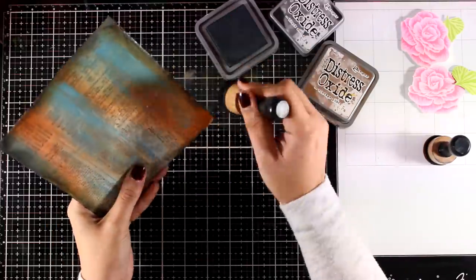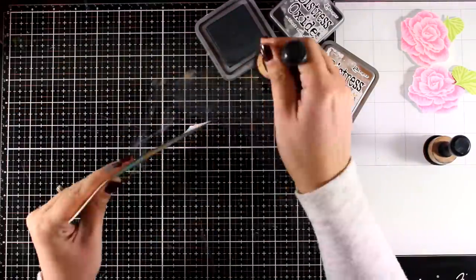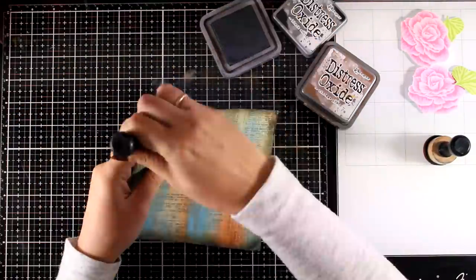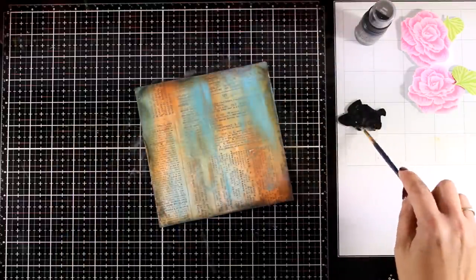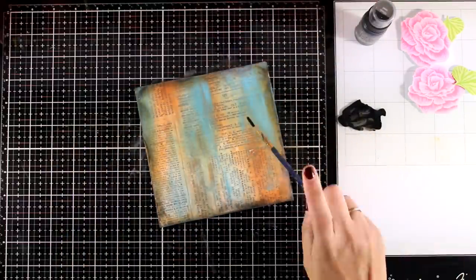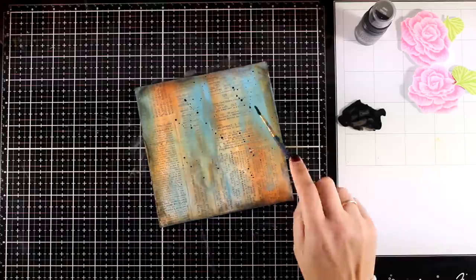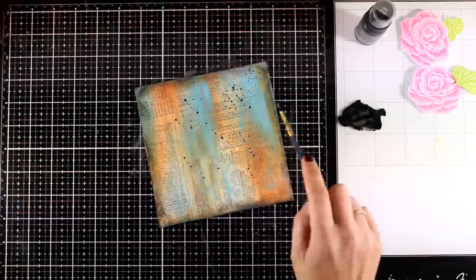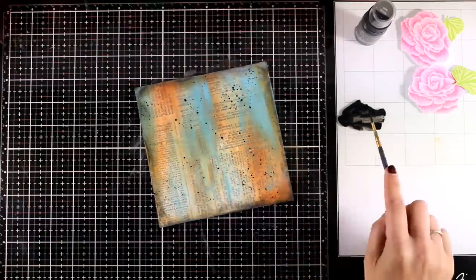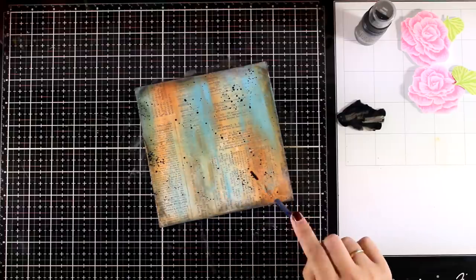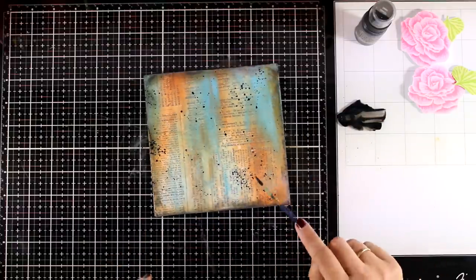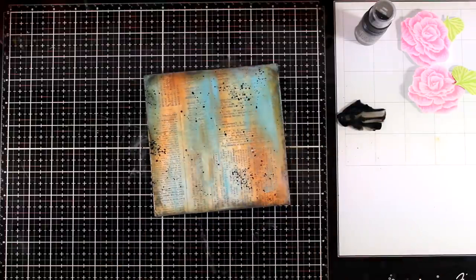At this stage you can play around with your background you can do some stamping on top you can do stenciling if you like you can add embossing paste. I decided to add just some black splashes so this is black soot distress paint and I have diluted it with water to make it fluid and acrylic paint or black gesso would do.